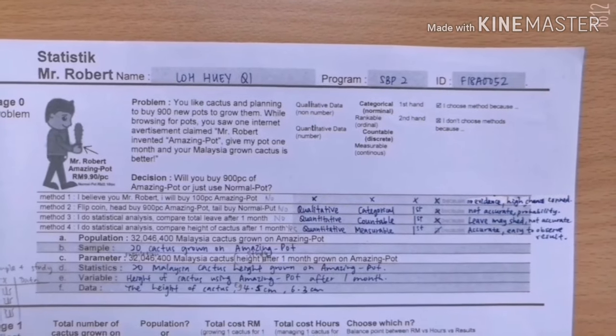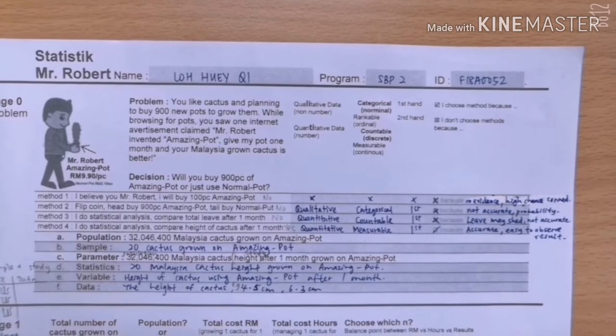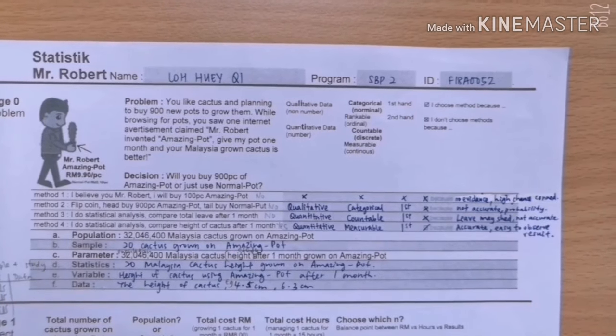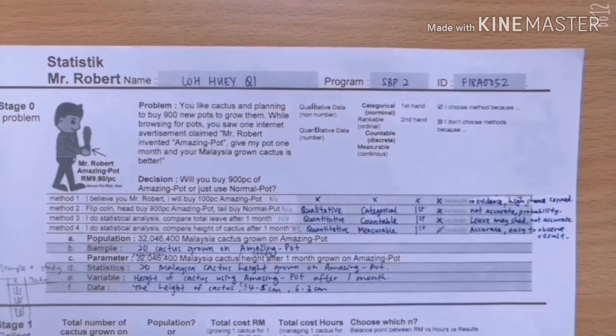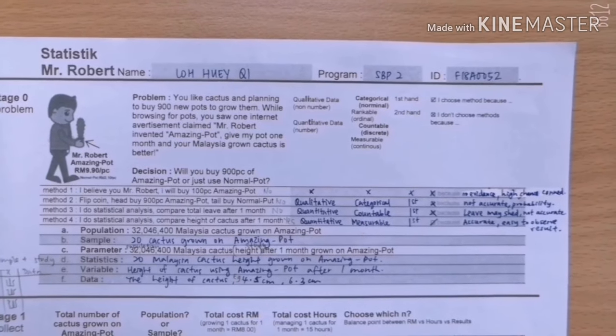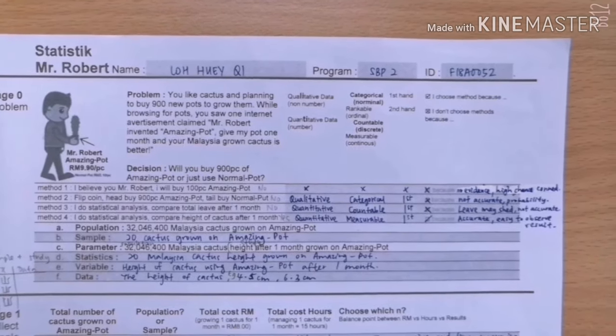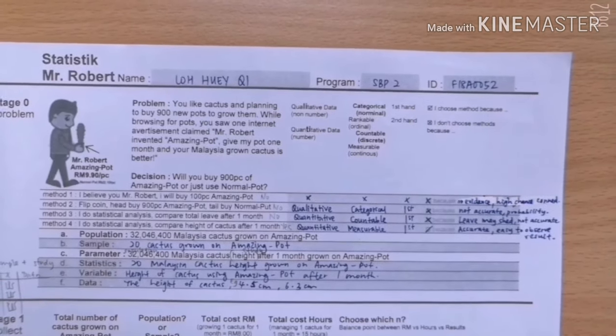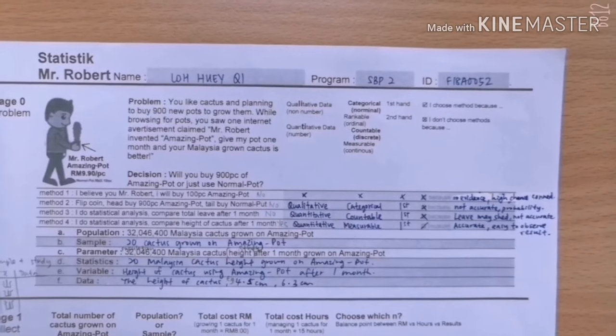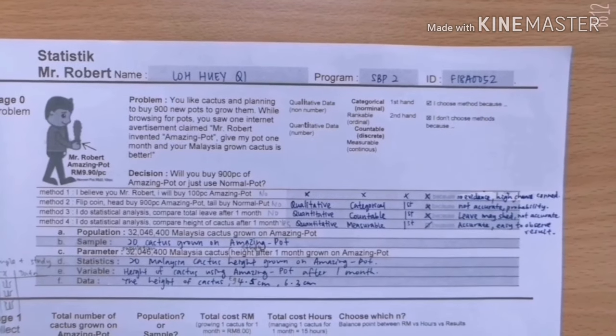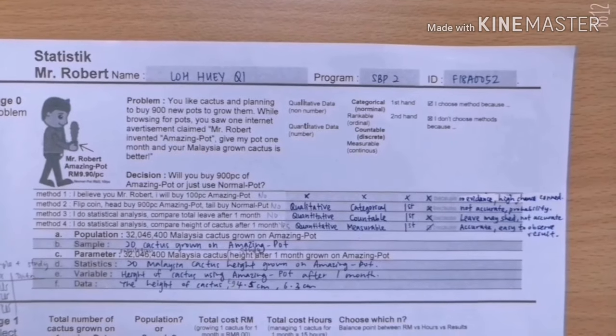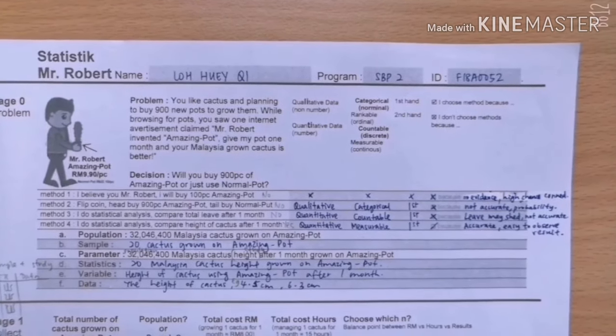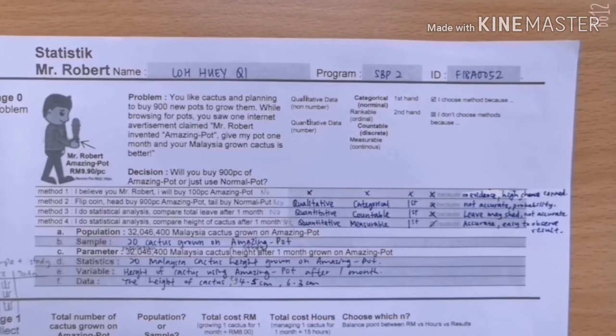Method two which is flip coin is qualitative, categorical and first-hand but it's not accurate because we use probability. Method three is I do a statistical analysis, compare the leaf, total number of leaf after one month. It's quantitative, countable, first-hand but it is not accurate because the leaf may shed. Method four is the most suitable method to be used because it is quantitative, measurable, first-hand and it is easy to observe the result and make the right decision.